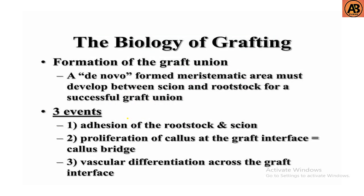The biology of grafting contains three events. First is the apposition of the rootstock and scion. Second is the proliferation of callus at the graft interface to form a callus bridge. Third is vascular differentiation across the graft interface.